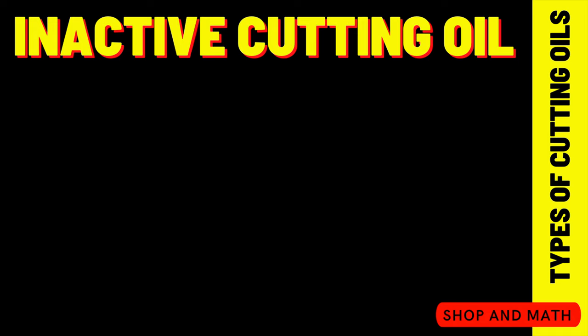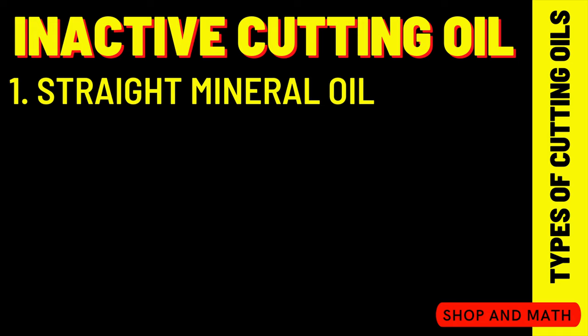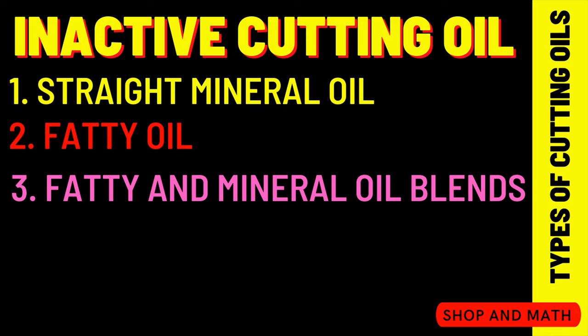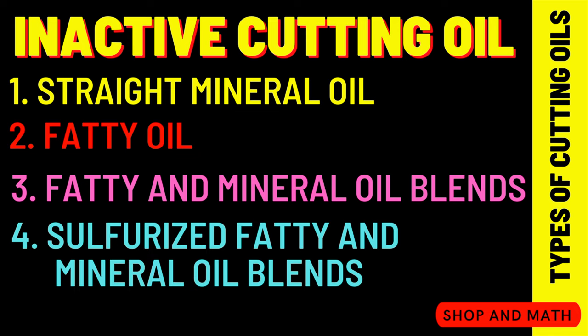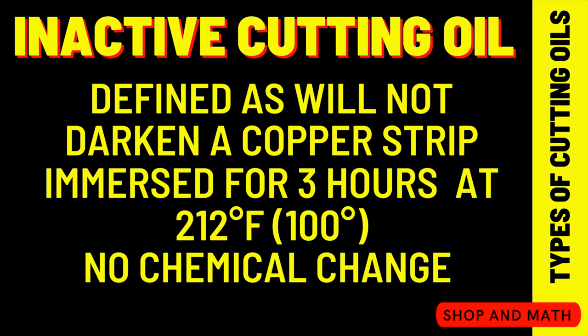Inactive cutting oil: there are four types — straight mineral oil, fatty oil, fatty mineral oil blends, and sulfurized fatty and mineral oil blends. Inactive cutting oil is defined as cutting oil that will not darken a strip of copper immersed for 3 hours at 212°F. After that period of time there is no chemical change to the copper strip.